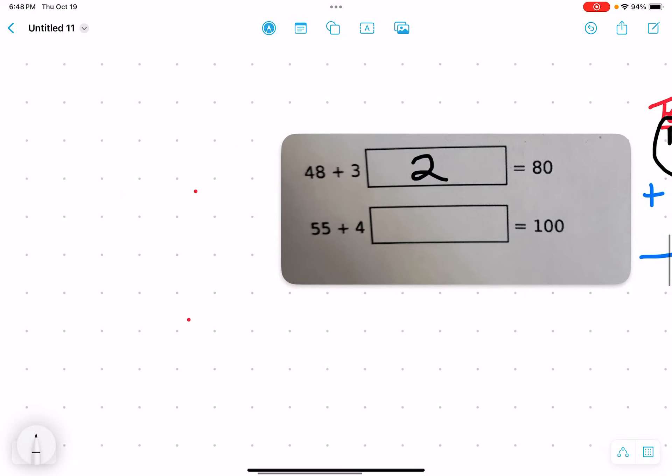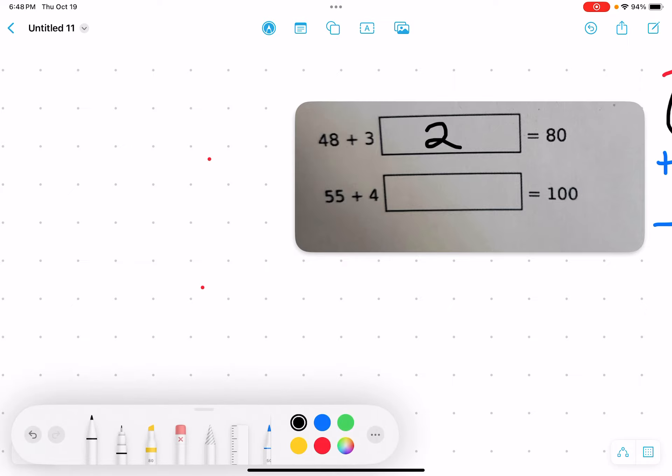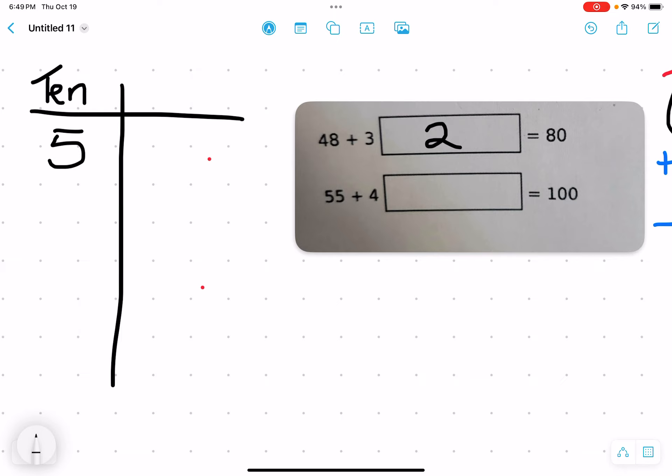Let's try it again. This time, it says that you have 55, which is 5 tens and 5 ones. Then you're going to add a number that has 4 in the tens spot and a missing number in the ones. When you put it together, you'll get 100. 100 looks like this in our place value chart because the number 100 has 10 tens and 0 ones.